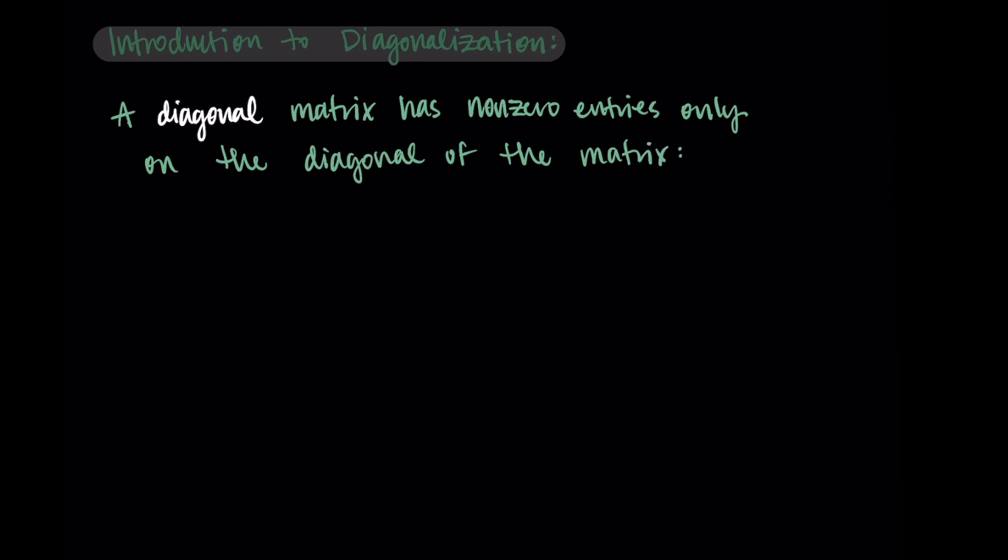To talk about diagonalization, we need to first know what a diagonal matrix is. A diagonal matrix corresponds to a square matrix where we have n by n as our dimensions, and it's a diagonal matrix if there are only nonzero entries on the diagonal. This means if we look at the diagonal that goes from the top left to the bottom right, these are the entries that have values that aren't zero, and then all other entries in the matrix are zero.